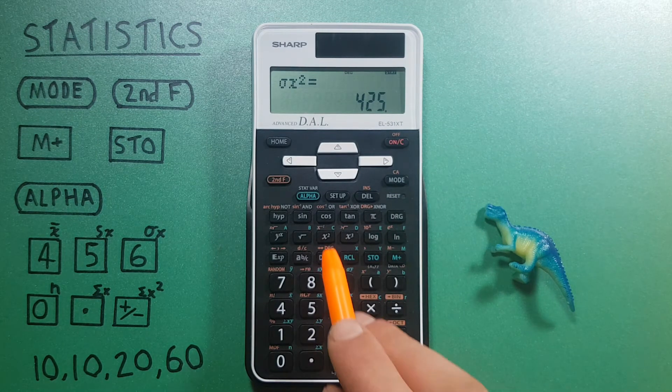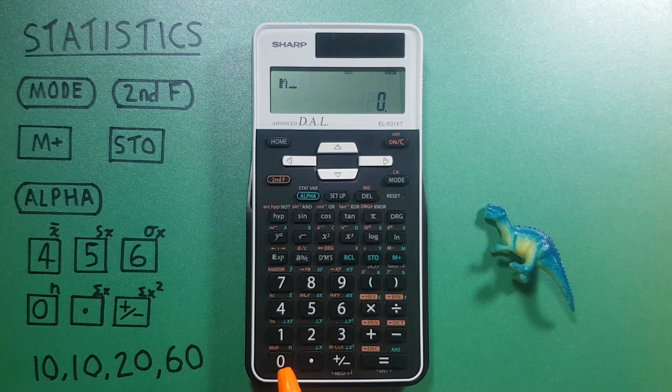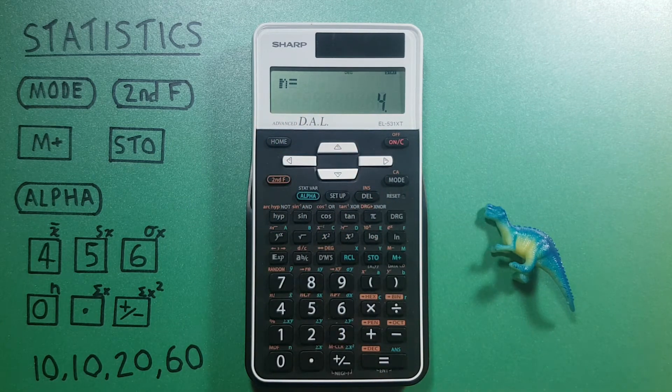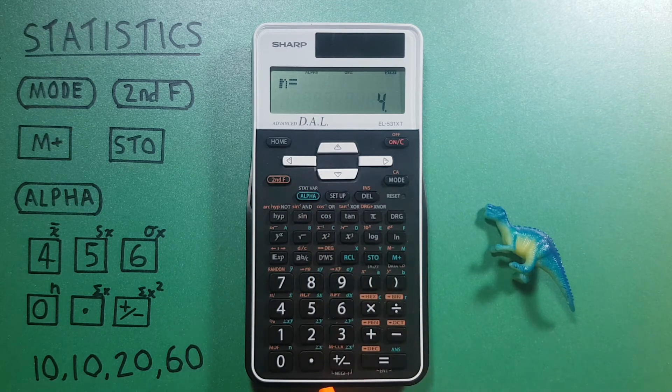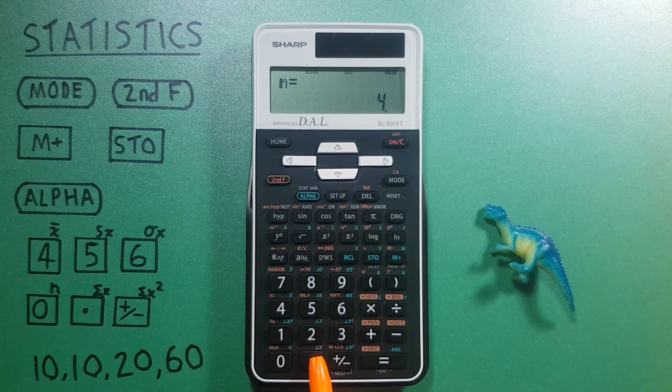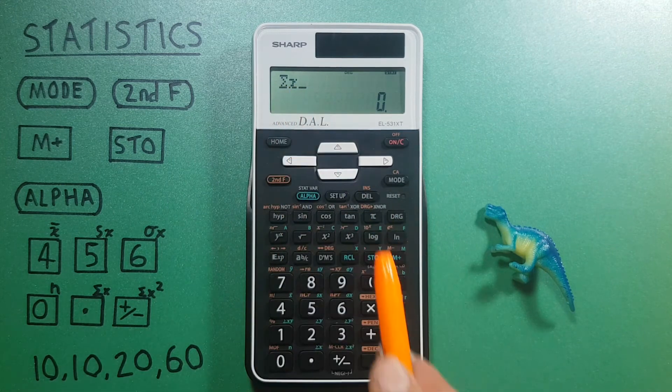And then again 0, N gives us the number of pieces of data we have.